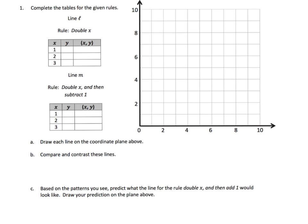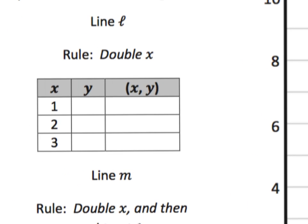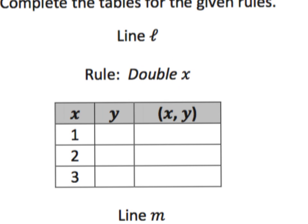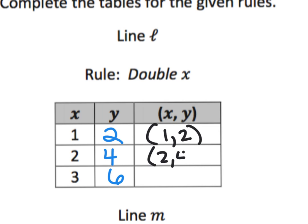We're going to zoom in so we can see that first rule. It says to double your x value, and they've given us our x values already, so all we have to do is double them. That becomes 2, 4, and 6 — 1 times 2 is 2, 2 times 2 is 4, 3 times 2 is 6. So our ordered pairs become (1,2), (2,4), and (3,6).